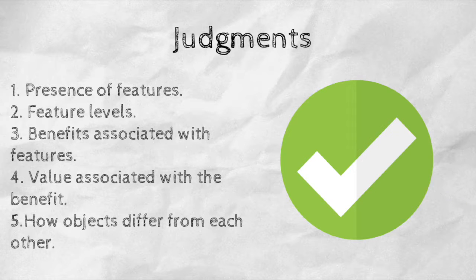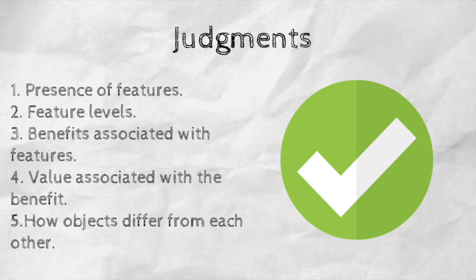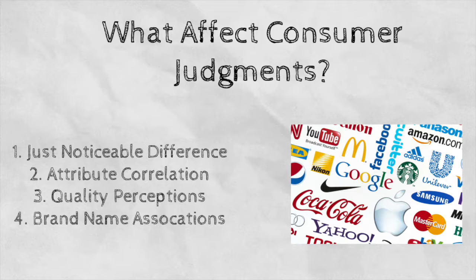The accuracy of a consumer's evaluation depends heavily on the quality of judgments that they make. Judgments are mental assessments of the presence of attributes and the benefits associated with those attributes. During the evaluation process, consumers make judgments about the following: the presence of features, the feature levels, the benefits associated with the features, the value associated with the benefit, and how objects differ from each other. The first issue that affects consumer judgment is just noticeable difference — how much stronger one stimulus must be compared to another if someone is to notice that the two are not the same.